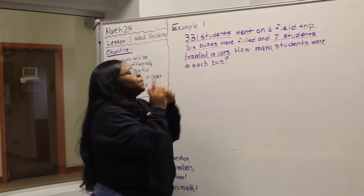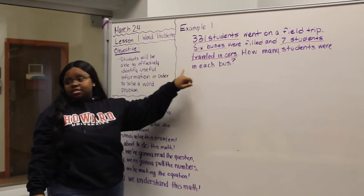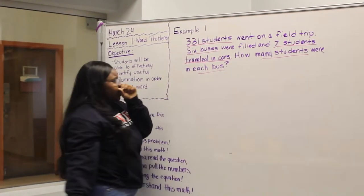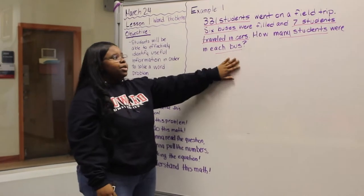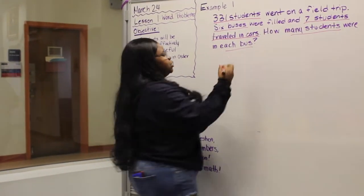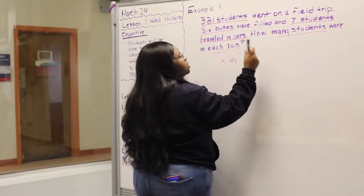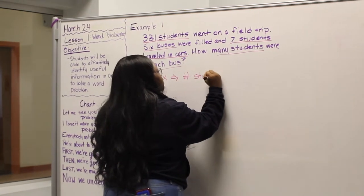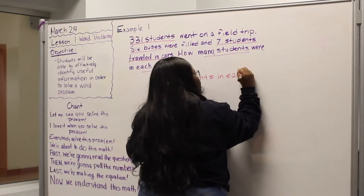Alrighty, and we need to also focus on exactly what they're asking us to solve for. So we're solving for how many students are in each bus. So we need a variable to figure out how many students are in each bus. So we're going to use x today for that variable. And x is going to represent the number of students in each bus.